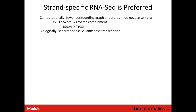Strand-specific data is absolutely preferred — whenever you have the option, use strand-specific RNA-seq. Biologically it allows you to separate sense from antisense transcription. It also simplifies the assembly process: with double-stranded data, any given k-mer is represented in the graph in both its forward orientation and reverse complement orientation, and they mean the same thing. With strand-specific data, we can distinguish between the forward k-mer and its reverse complement — they become two separate nodes in the graph, greatly simplifying transcript reconstruction.